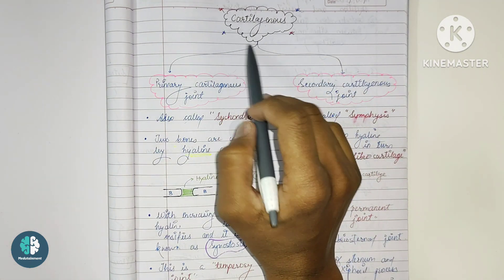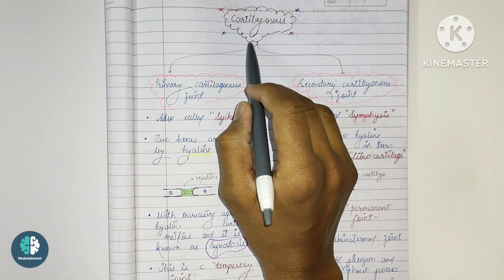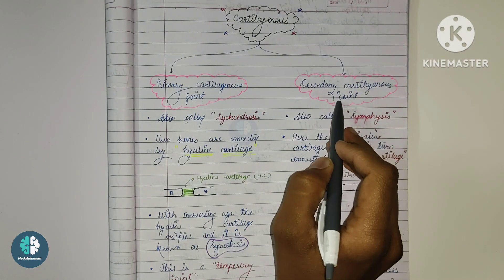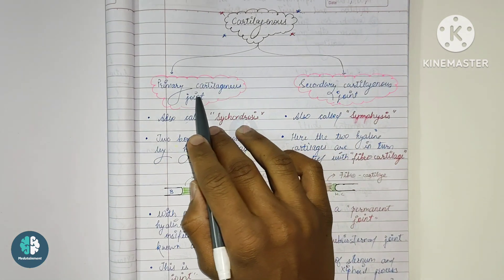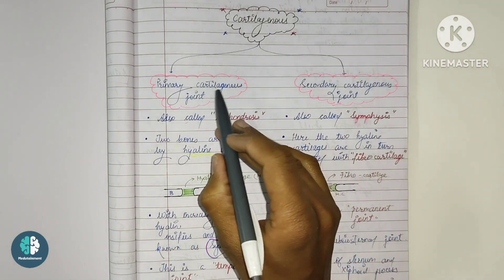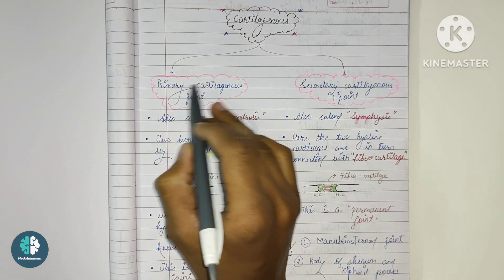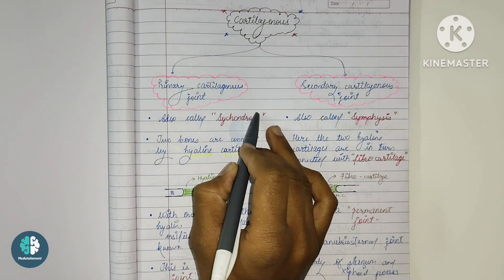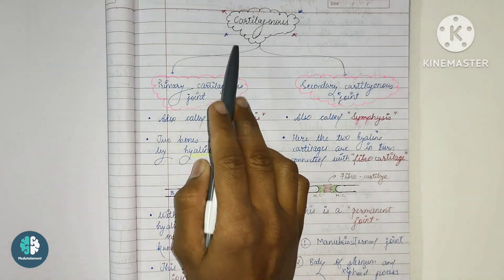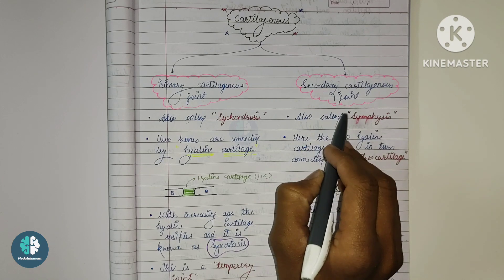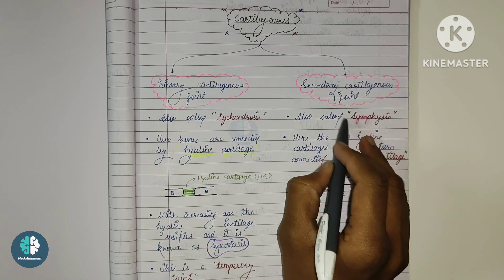Let's begin with the discussion on the topic of cartilaginous joint. Cartilaginous joint is divided into two types: primary and secondary cartilaginous joint. The primary cartilaginous joint is also known as synchondrosis — 'chondros' referring to cartilage — and the secondary cartilaginous joint is also known as symphysis.